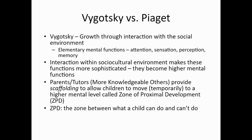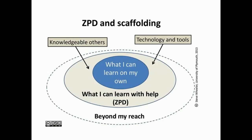Parents and tutors are what we call more knowledgeable others, and they provide what we call scaffolding. Scaffolding is assistance. This allows children to move temporarily to a higher mental level called the zone of proximal development. The blue circle in the center of the diagram is what a child can do on their own. However, the ZPD is what they can do with help from others, and also with help from things like technology and tools.